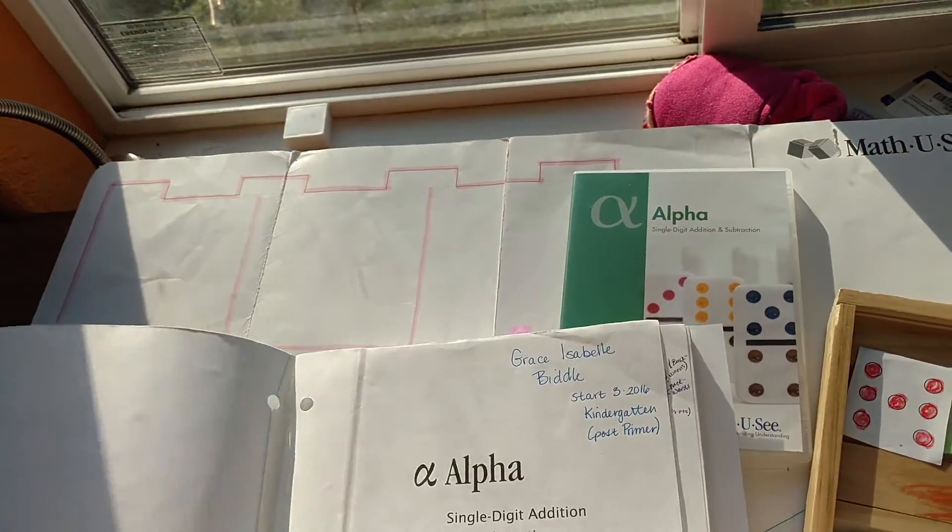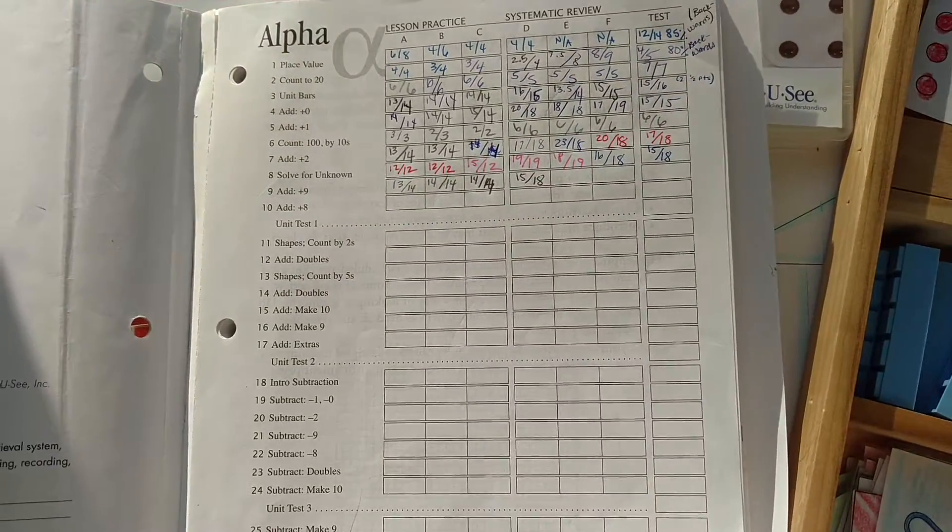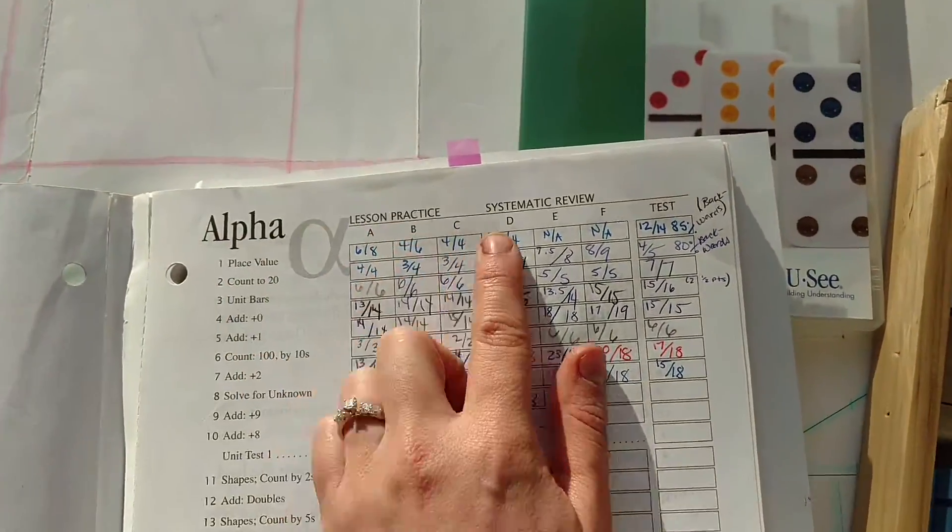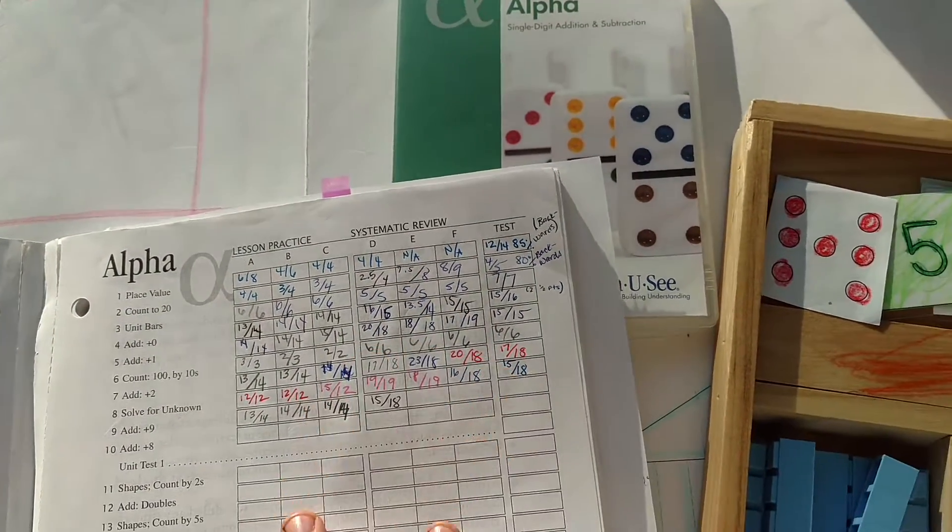And in the front they have a thing for record keeping, which I think is fantastic. I don't use this anymore. I have a different thing I do. But I love that they have this in here. And you can see, again, they only go up to F. We do more.